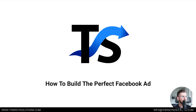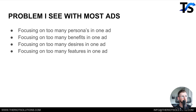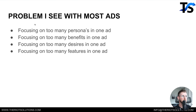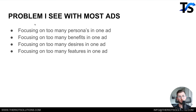So, how to build the perfect Facebook ad. The problem I see with most ads is that they're focusing on too many personas in one ad — like five or six different personas. Problem is, when you speak to a lot of things, you speak to no one. Next, they're focusing on way too many benefits, too many desires, and too many features in one ad. When you overload the prospect with all these different benefits, desires, features, and personas, you leave the ad scrambled and you're not really sure what you just took away from it.